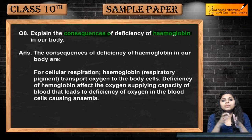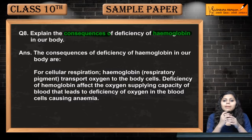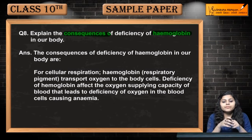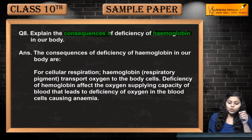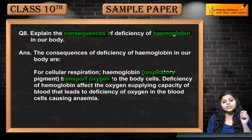If there is a deficiency of hemoglobin in our body, what will happen? First, what is hemoglobin? Our blood is red in color because of the presence of the pigment hemoglobin. Hemoglobin is a pigment which gives our blood its red appearance. It is also a respiratory pigment, which means it transports oxygen to the body cells.